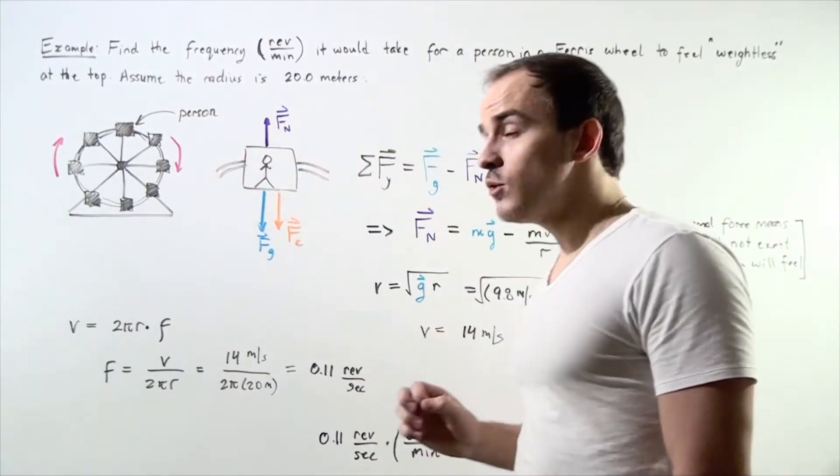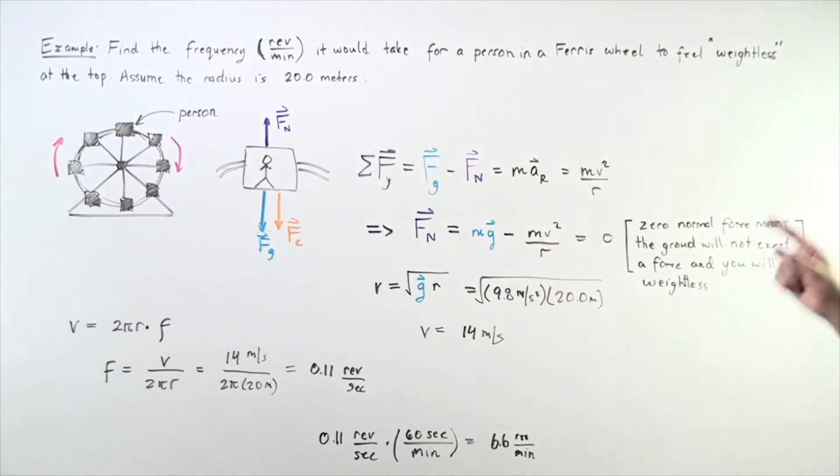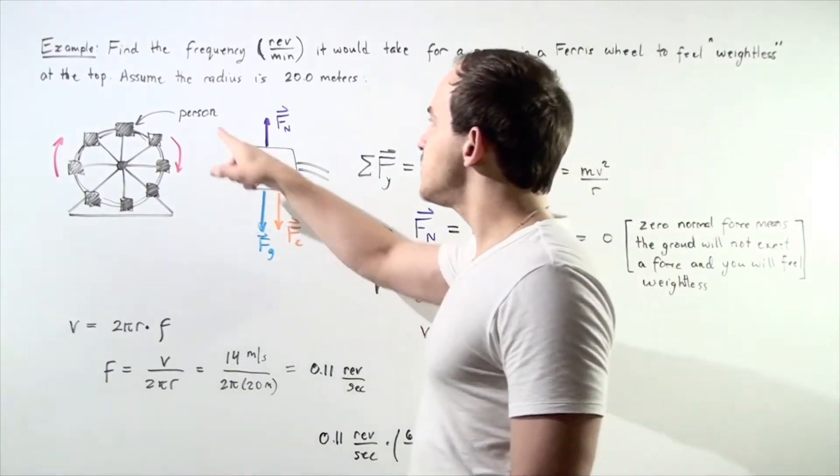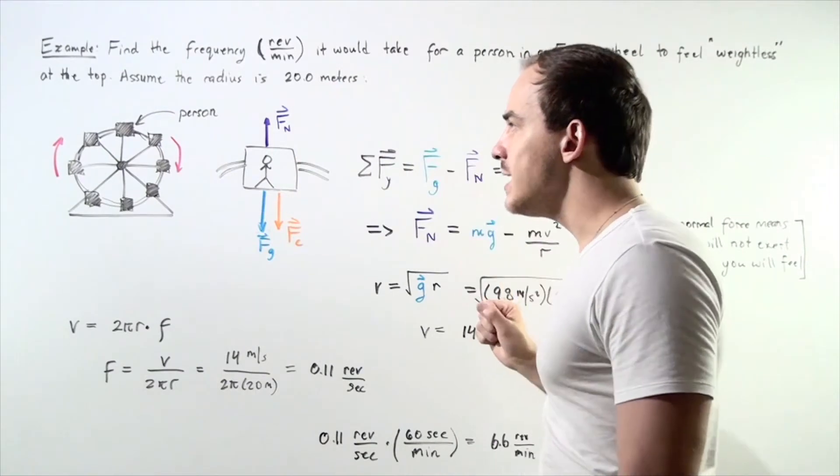We want to find the frequency it would take for a person inside the Ferris wheel to feel weightless at the top of the arc. Let's make the assumption our radius of the Ferris wheel is 20 meters.